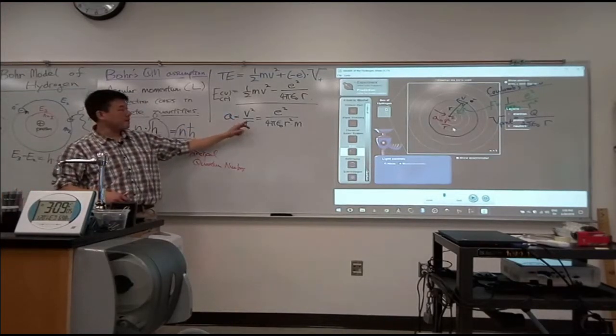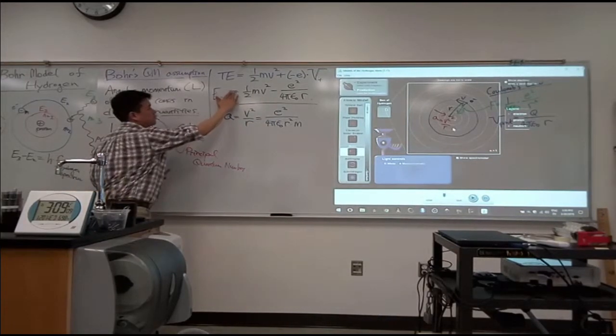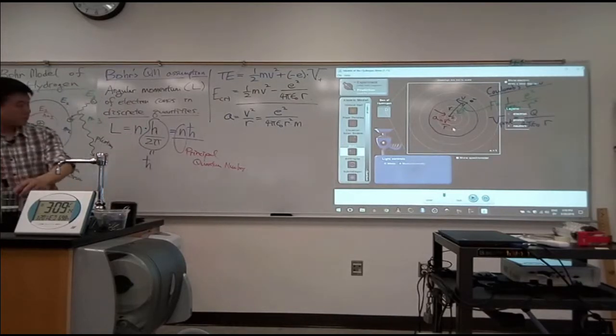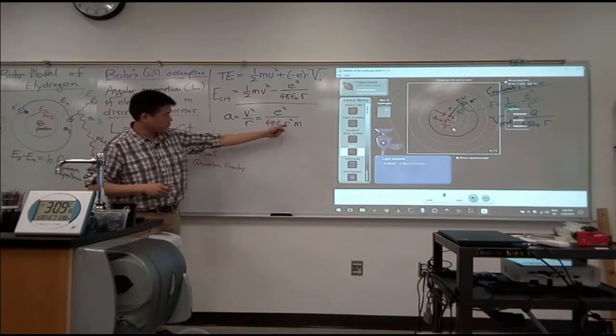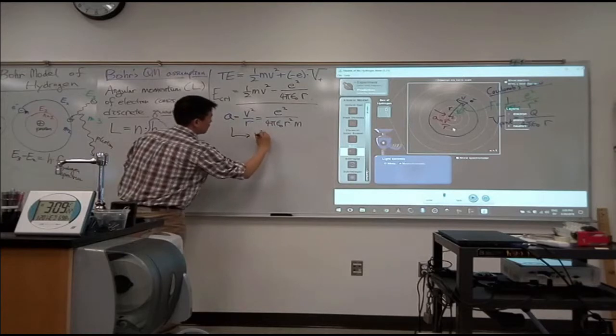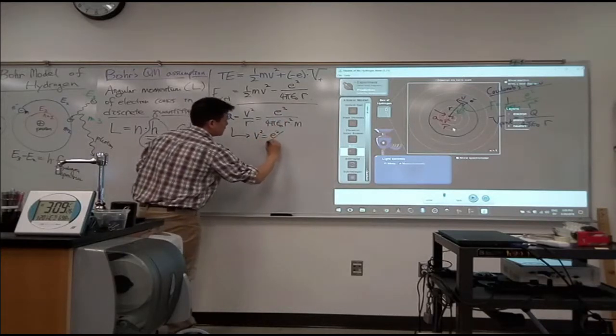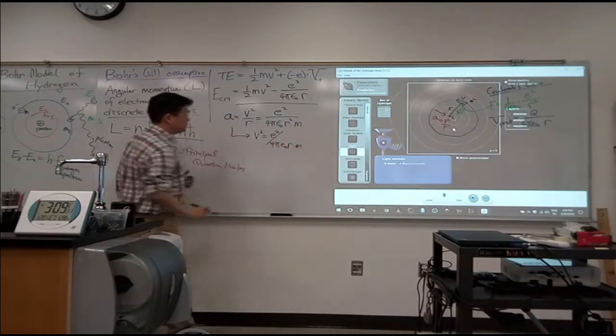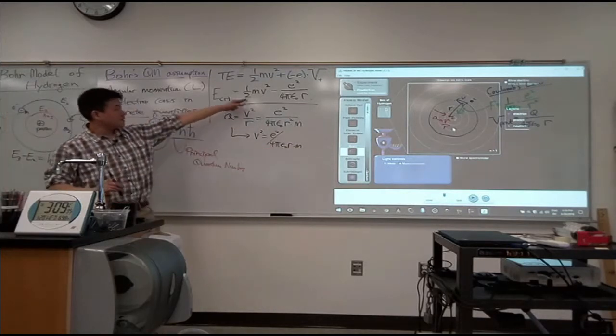So with all of that combined, what you can say is this. You can say, all right, my centripetal acceleration, which from the circular motion kinematics is v squared over r. That has to be consistent with the Newton's second law. So this should be equal to the force divided by mass. So it should be, in terms of magnitude, e squared over 4 pi epsilon naught r squared times the mass of the electron.